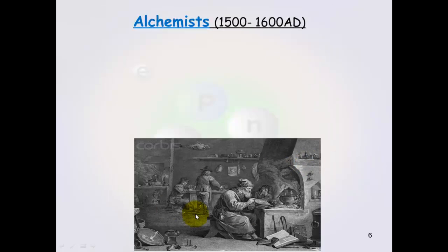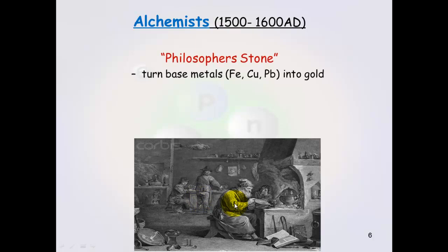This led alchemists for hundreds of years trying to turn base metals into gold, also known as the Philosopher's Stone, or looking for panacea, which was a cure for all illnesses.